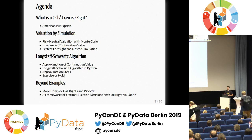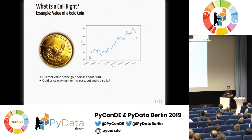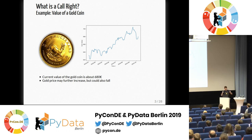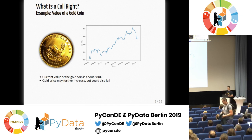So what is a call right? A couple of weeks ago, I went through my closet and found a gold coin — half a Krugerrand — that I had forgotten about for years. First thing I did, I checked what it's worth: 680 euros. Wow, that's more than a PyCon ticket. Then I remembered the coin is a gift from my grandfather, so I'm a bit sentimental about it and I'm not just going to cash it in. I looked at the gold price over the last months and the value of the coin increased fairly well.